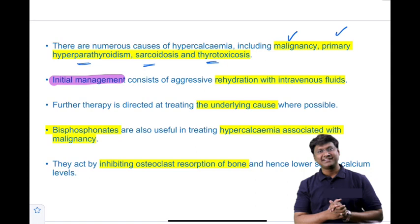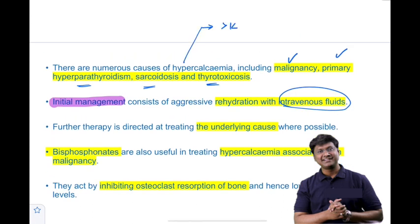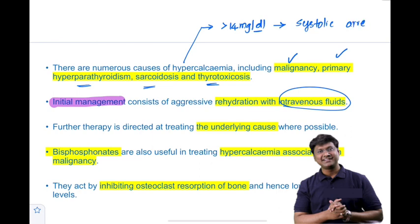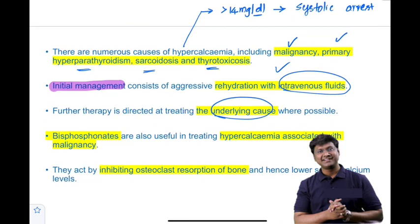Initial management of hypercalcemia involves IV fluids to dilute and flush out calcium. When calcium levels exceed 14 mg/dL, the individual can develop systolic arrest. If hypercalcemia is due to malignancy, bisphosphonate therapy is indicated — agents include zoledronic acid, ibandronate, and alendronate. Bisphosphonates work by inhibiting osteoclast resorption of bone, thereby lowering serum calcium levels.